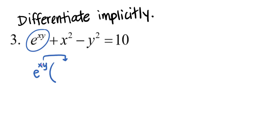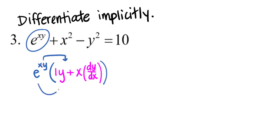xy is a product, so I will use the product rule. The derivative of x is 1 and I will leave y alone, plus leave x alone and the derivative of y is dy/dx. This is all in the parentheses for e to the xy, so e to the xy is going to need to be distributed to each of those two terms. That gives us the derivative of e to the xy.